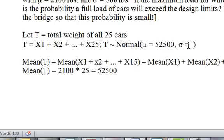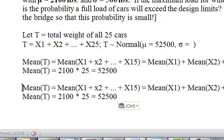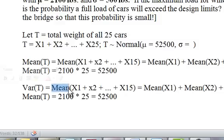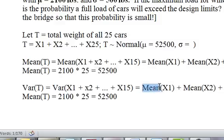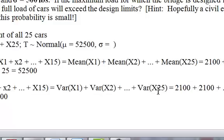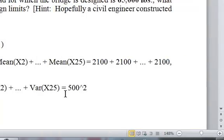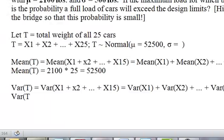Now sigma, I'm not allowed to add standard deviations, but I'm allowed to add variances as long as my random variables are independent. Variance of T equals the variance of the sum, which equals the sum of the variances, as long as I have independence. The variance here is 500 squared plus 500 squared plus 500 squared. My variance is 25 times 500 squared.